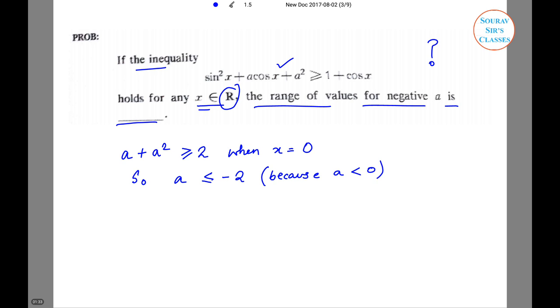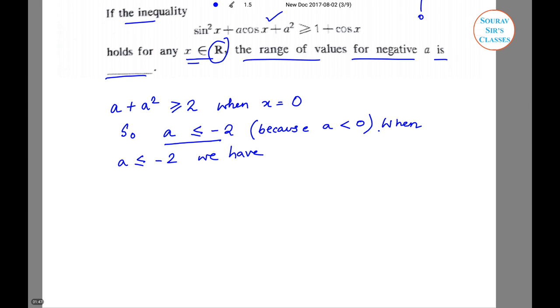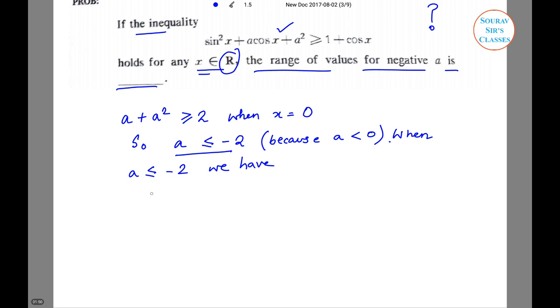Now when a ≤ -2, we have a² + a cos x ≥ a² + a, which is ≥ 2, which is ≥ cos²x + cos x. We are using these inequalities together.